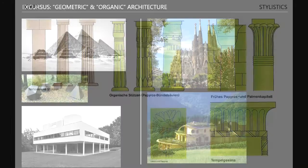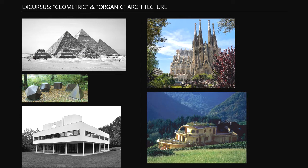I want to talk briefly about these two terms - geometric and organic architecture - as an excursus, just three minutes, then I go back. The left side is geometric architecture - a modern house by Le Corbusier and the pyramids, and the platonic solids. Geometric means it's an abstraction we actually cannot find like this in nature. The very early houses, like oval houses, are more nature-like. I call it the first architectonic revolution when a roundish oval house became rectangular, because rectangular shapes you can easily add together, plan easily - but they don't appear like this in nature.